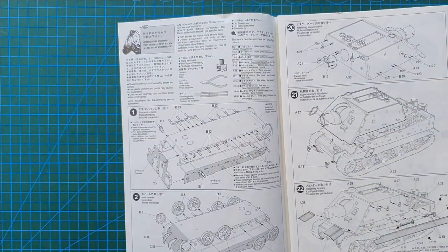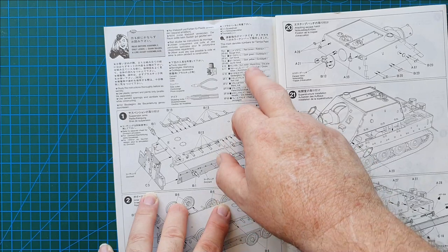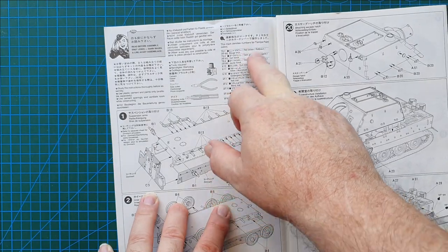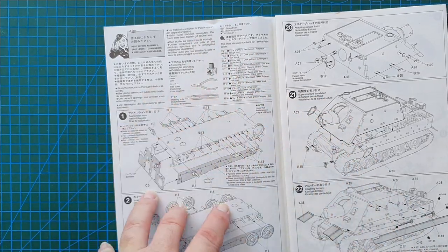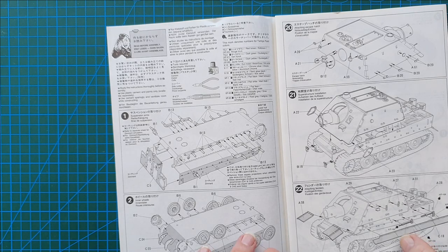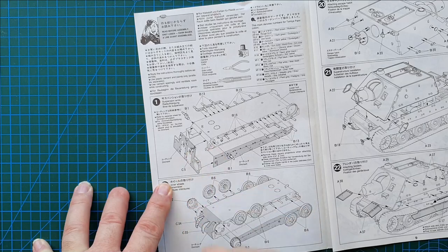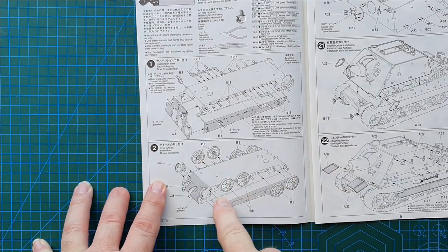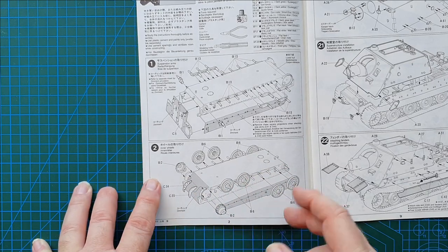There is no sprue layout, which is normal for Tamiya. You get your basic paint callouts, all Tamiya colors and recommended tools. Remembering this is a '94 kit, the instructions are a hybrid between new style and old classic style. First up, torsion bars go into the lower hull, sides go on and the back goes on. Then you put the wheels on.